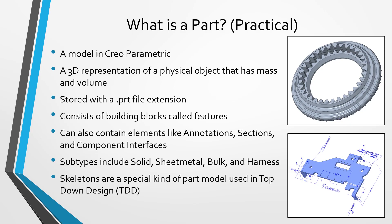Parts are stored with a file extension that ends in .prt, and a part is a collection of objects called features. The way that we create our parts is that we start with one feature and we progressively add features to the model until we come up with our intended geometry.